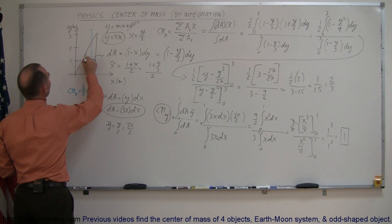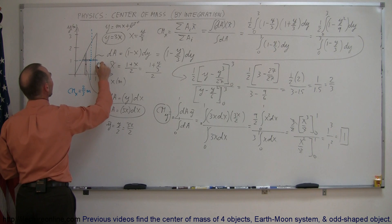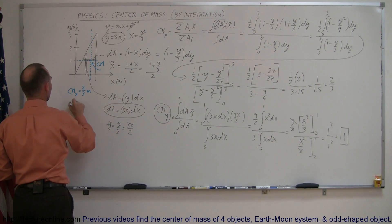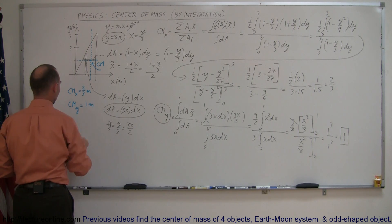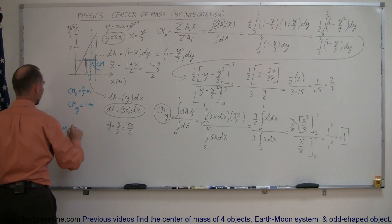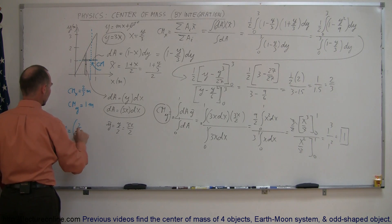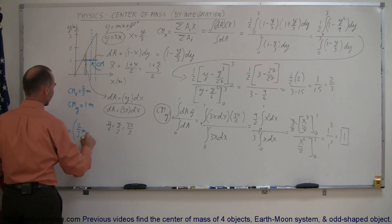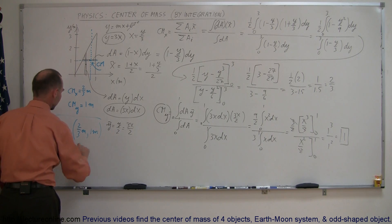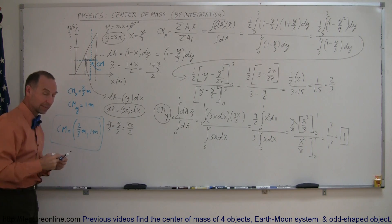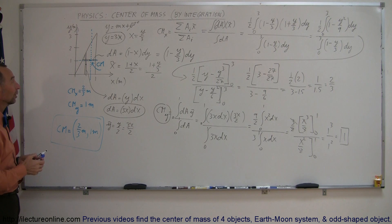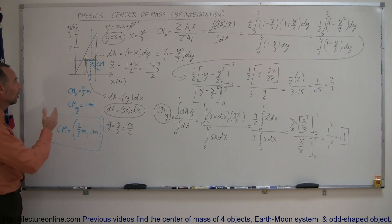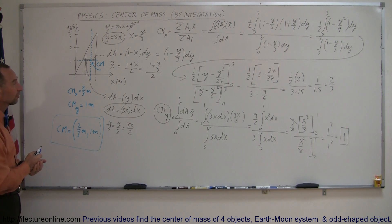So that's equal to this right here, and where the two meet, this is the center of mass of this object. We can say that the center mass in the y direction is equal to 1 meter, and so the center mass can be defined as: in the x direction, 2 thirds meter, and in the y direction, 1 meter. And that's how you find the center mass of an object where you cannot just simply chop it into pieces — where you simply have to integrate in the two directions to find the x and y coordinate of the center of mass.